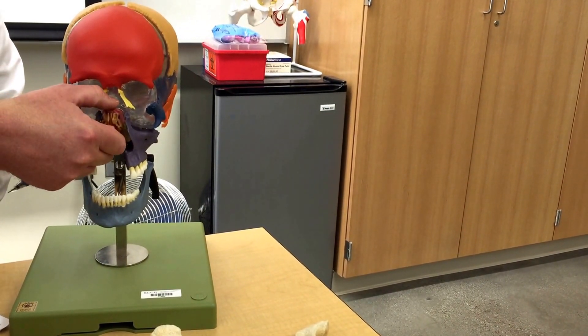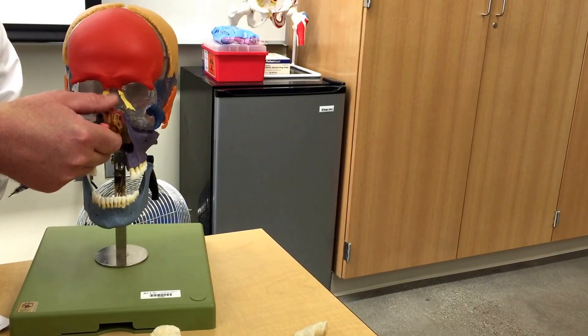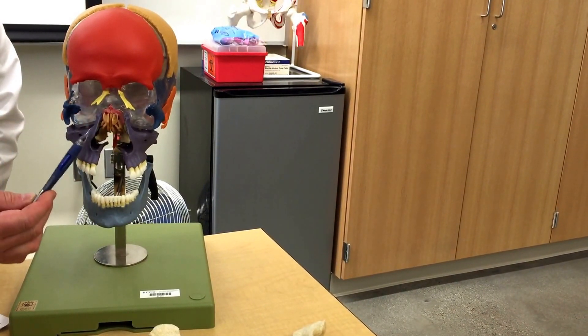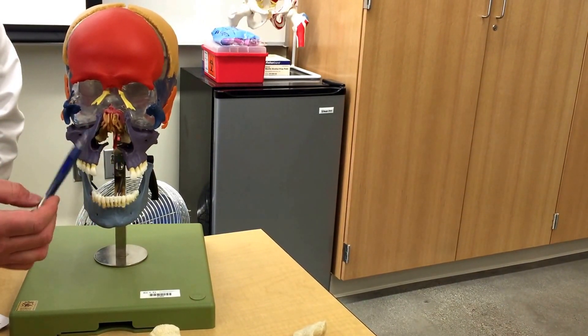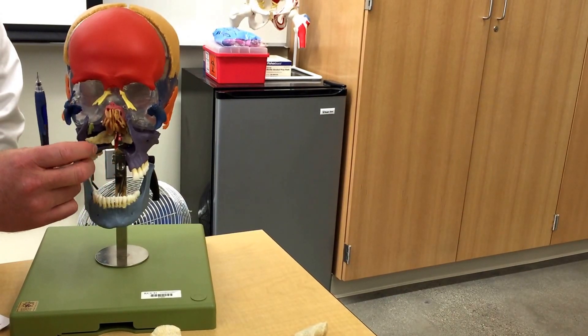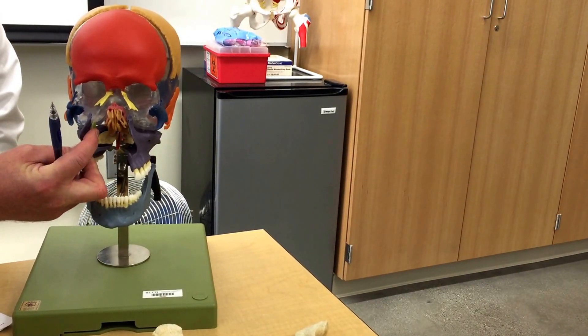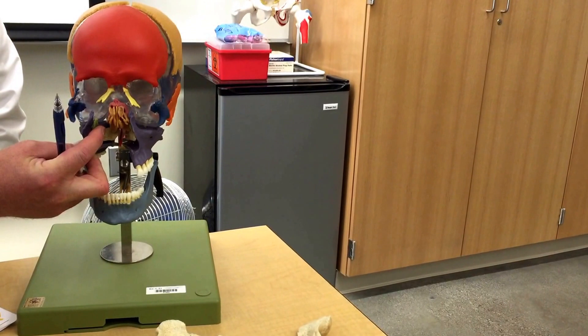This entire bone right here is the ethmoid bone right there in the nasal cavity. These are the two pieces of the maxilla, and in the maxilla, if you turn it out to the side, you see the lacrimal bones that would be medial in the orbit of the eye where your tears are produced.